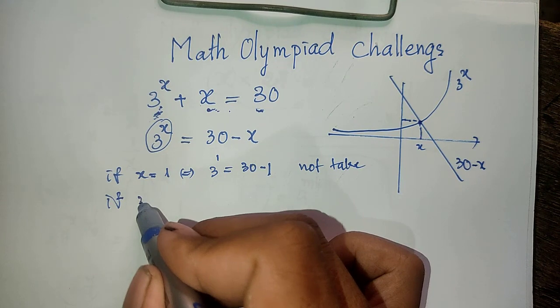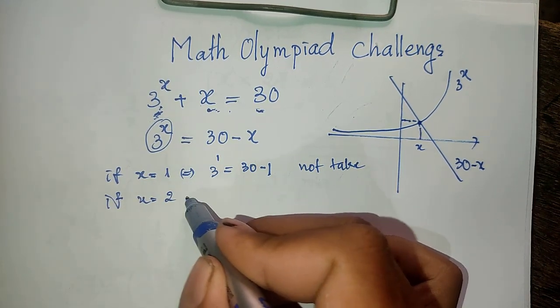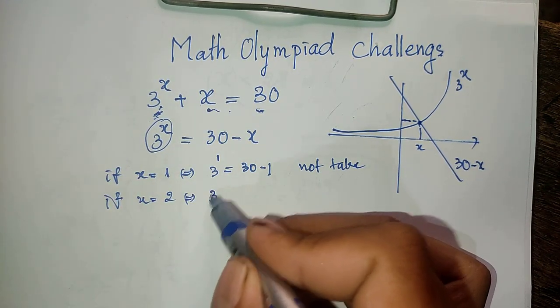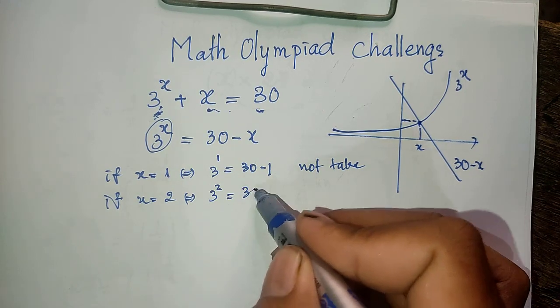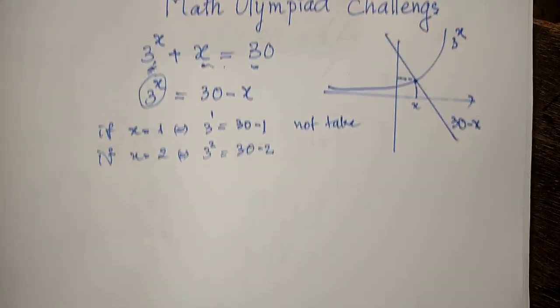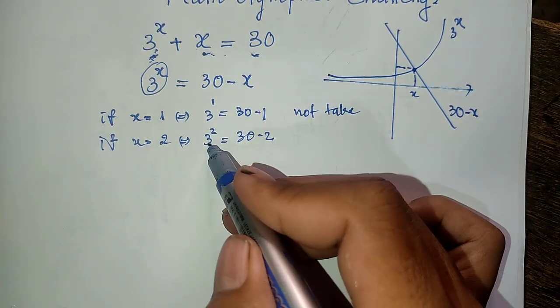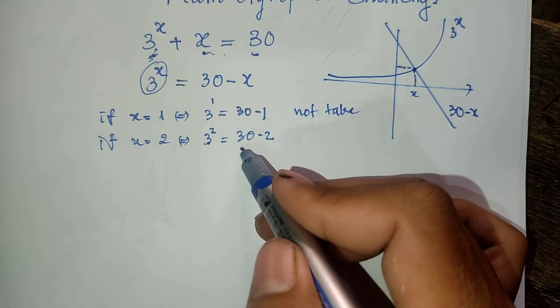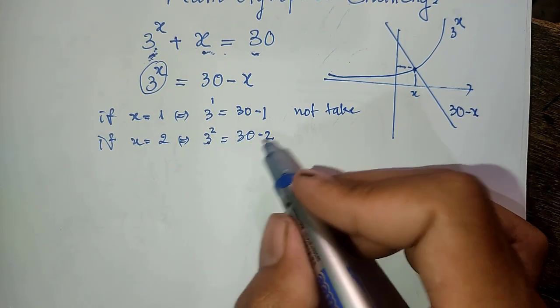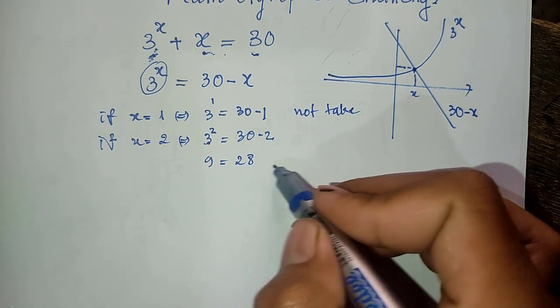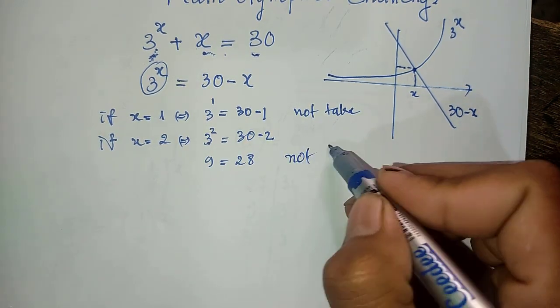If x equals 2, we get 3^2 equals 9, and 30 minus 2 equals 28. 9 equals 28? No, not true.